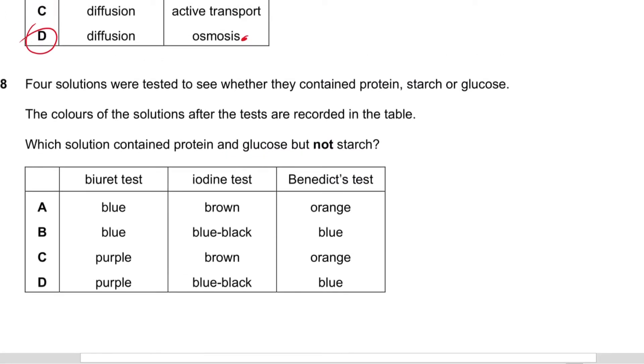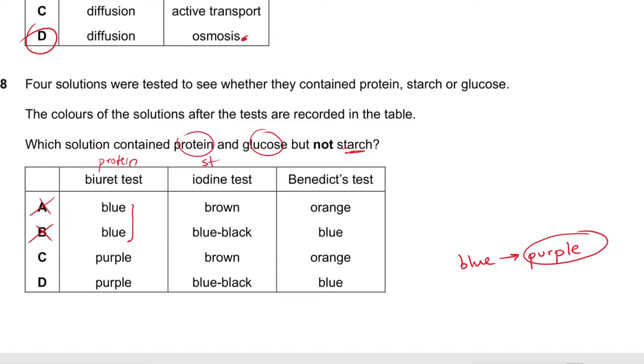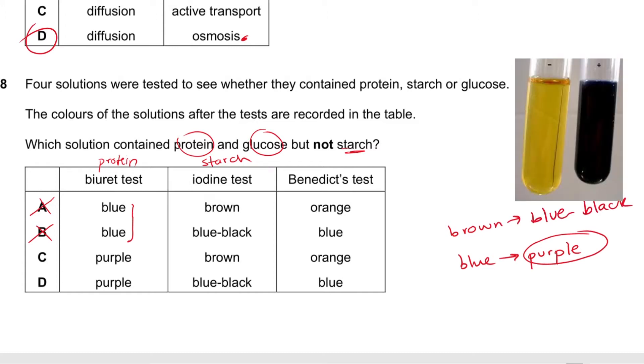Question number eight says four solutions were tested to see whether they contain protein, starch, or glucose. The colors of the solution after the tests are recorded in the table. Which contained protein and glucose but not starch? The Biuret test is a test for protein. It turns from blue to purple. We do want it to have protein so we're going to choose purple, so it's either C or D. Iodine is for starch, it's from brown to blue-black. We don't want starch so it has to be brown, so it's C.